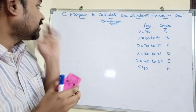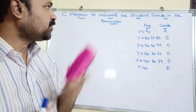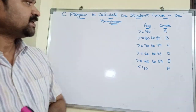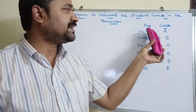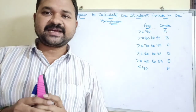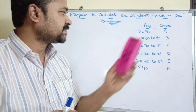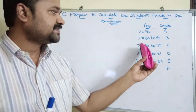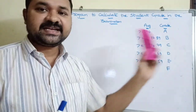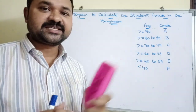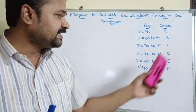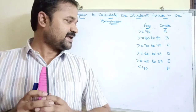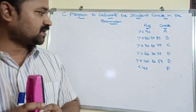Let's see this C program to calculate the student grade in an examination. If the average is greater than or equal to 90, print grade A. Between 80 to 89, grade B. 70 to 79, grade C. 60 to 69, grade D. 40 to 59, grade E. Less than 40, grade F — F stands for fail.